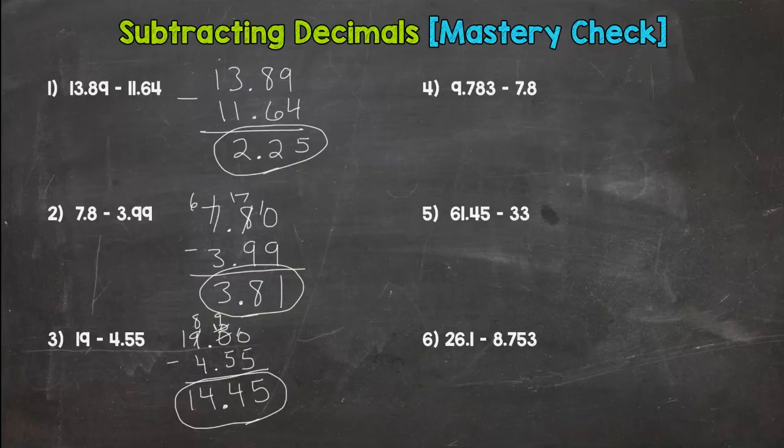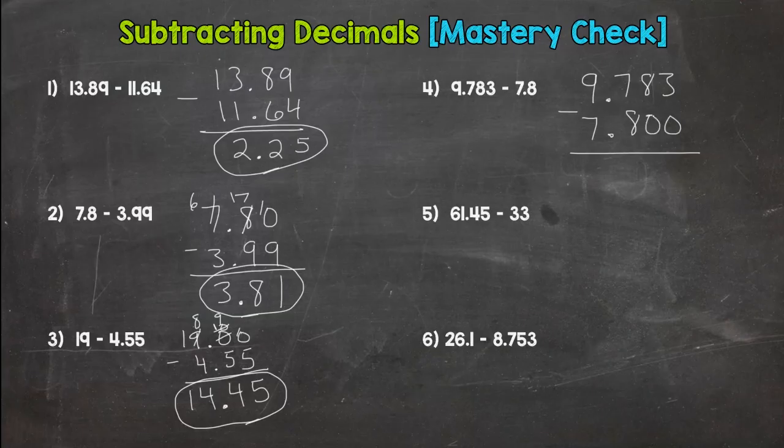That is the halfway point, so hopefully 3 for 3. Alright, number 4, let's line these bad boys up here. Some placeholder zeros. 3 minus 0 is 3, 8 minus 0 is 8. Cannot do 7 minus 8, we don't want to go negative here, so we need to borrow. 17 minus 8 is 9, decimal straight down, and 8 minus 7 is 1. So 1.983 thousandths.